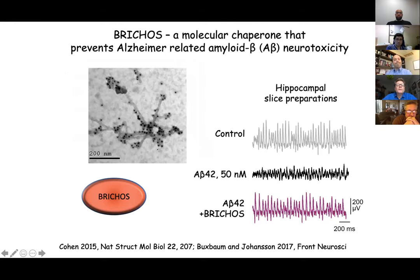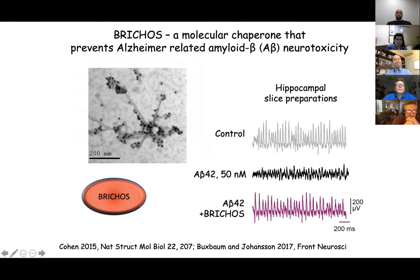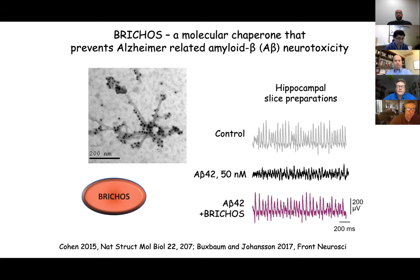The mechanism is that the BRICHOS domain binds to the surface of fibrils and thereby inhibits the secondary nucleation step in A-beta fibril formation — the step where the fibril surface acts as a catalytic surface bringing monomeric A-beta to form toxic oligomers in a much more rapid manner. This determines the sigmoidal shape of the aggregation traces and is the main generator of toxic oligomers, as shown by Sara Linse and Thomas Knowles and their collaborators.